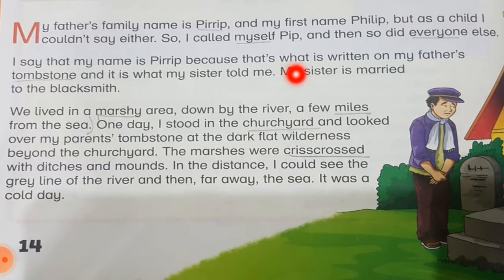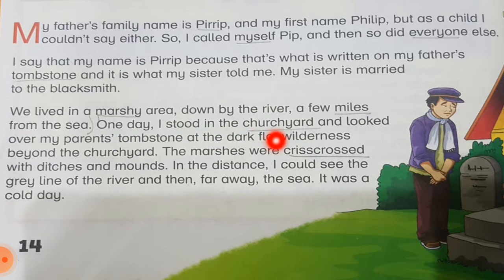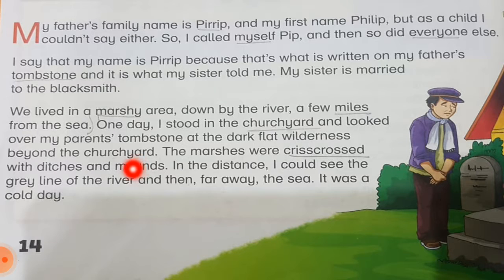I say that my name is Pirrip because that's what is written on my father's tombstone, and it is what my sister told me. My sister is married to the blacksmith. We lived in a marshy area down by the river, a few miles from the sea. One day I stood in the churchyard and looked over my parents' tombstone at the dark flat wilderness beyond. The marshes were crisscrossed with ditches and mounds.